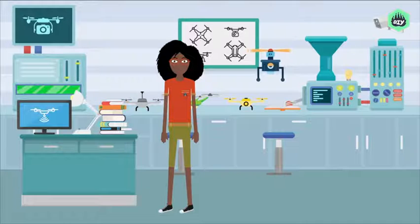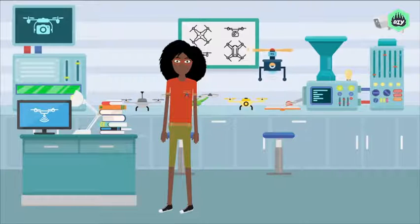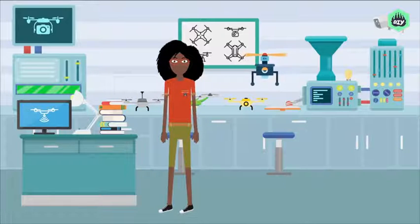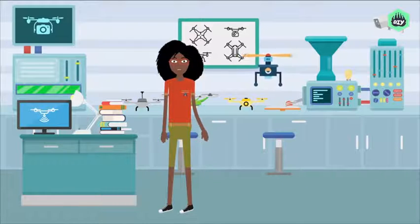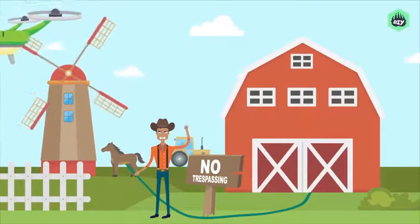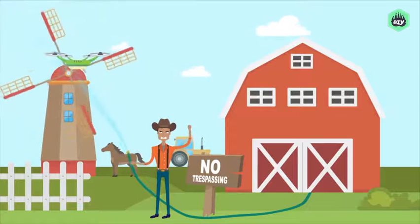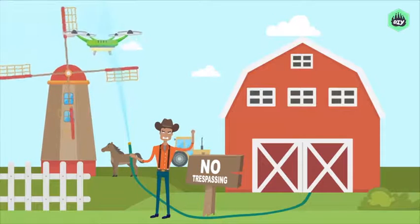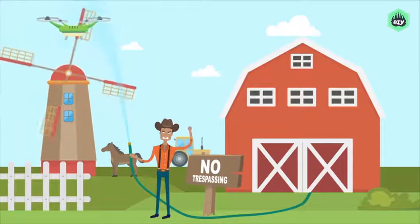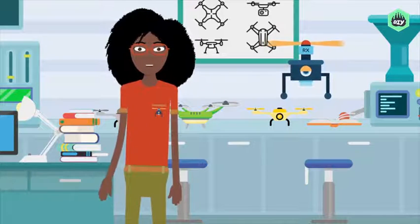Another big part of being a responsible pilot is knowing what's ethical, which means doing what's right, even if there technically isn't a law against it. It's a pilot's job to make the right decision, which means you should never do any of these things. Don't trespass. It's technically not illegal to fly over someone's private property, but that doesn't mean they'd be happy about it. Before you fly over any land that isn't public or your own, ask the owner for permission.